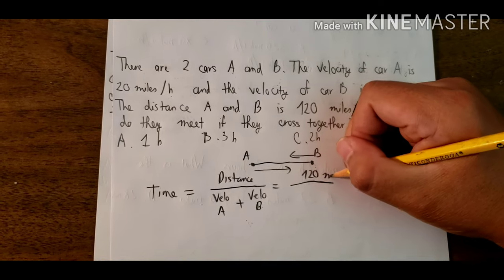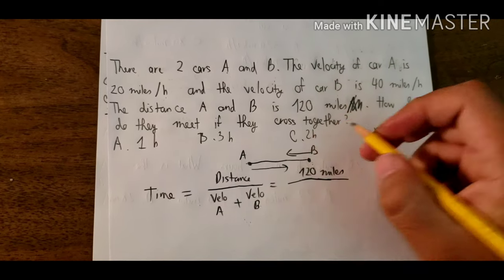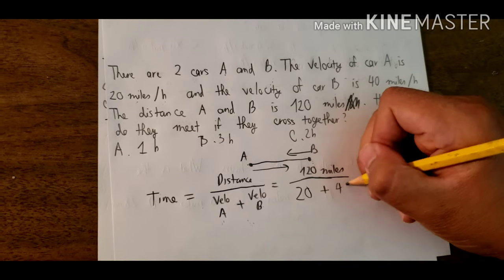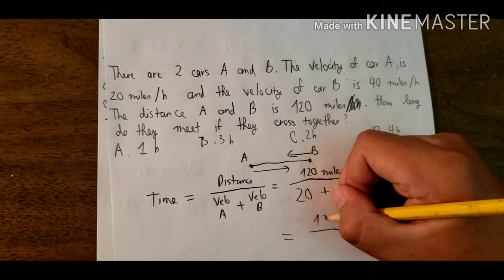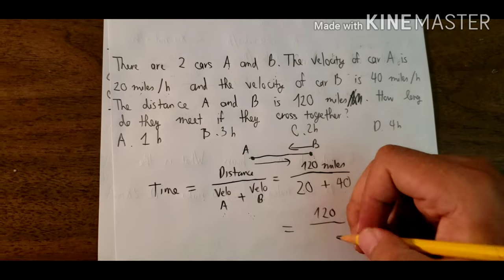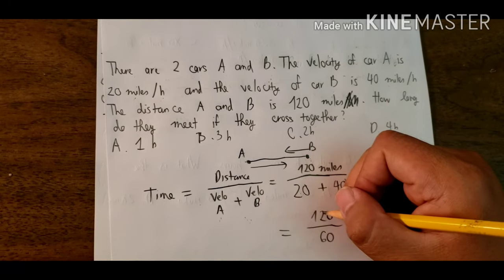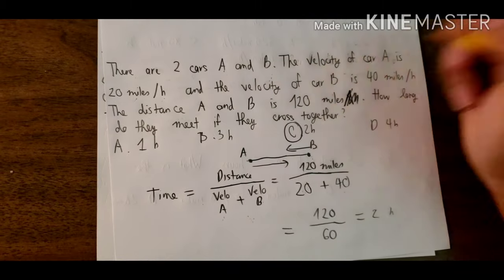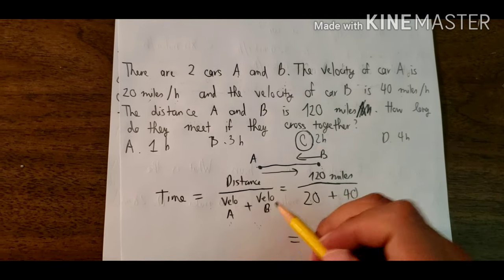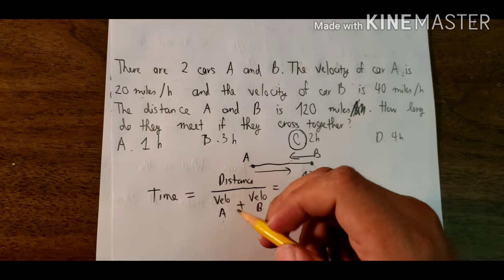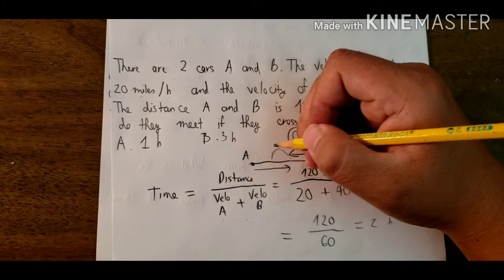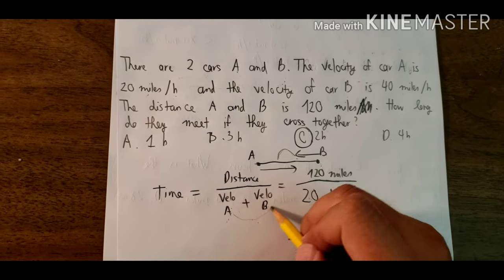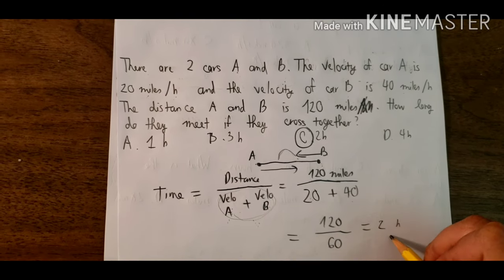We have the distance of 120 miles, car A at 20 miles per hour, and car B at 40 miles per hour. So we have 120 divided by the sum of 20 plus 40, which is 60. Therefore, 120 divided by 60 equals 2 hours. The answer is C. Both cars are moving, so their combined speed closes the gap, which is why we divide the total distance by the sum of both velocities.